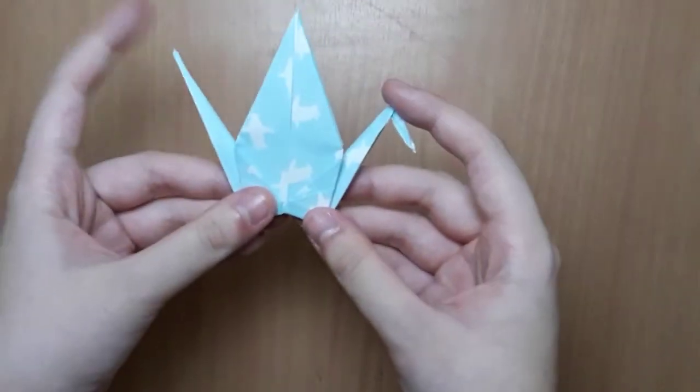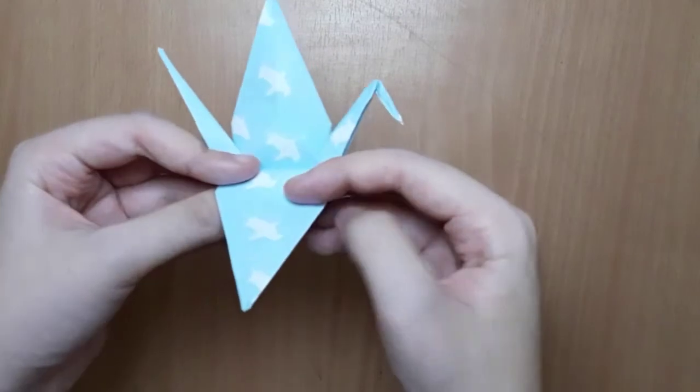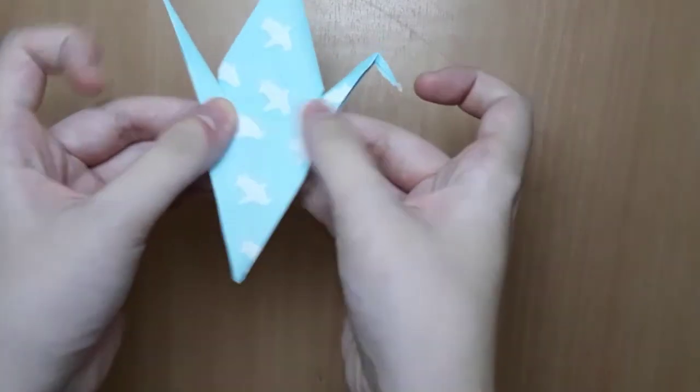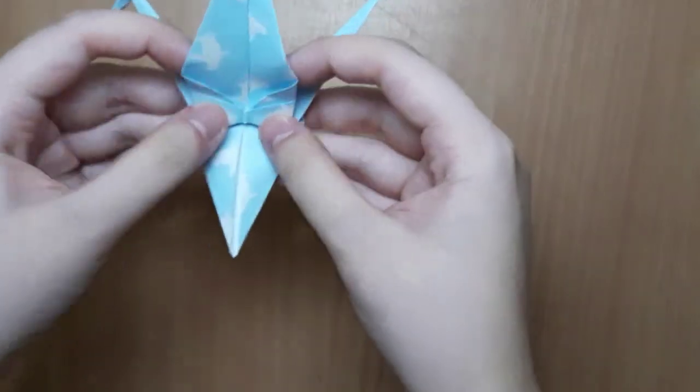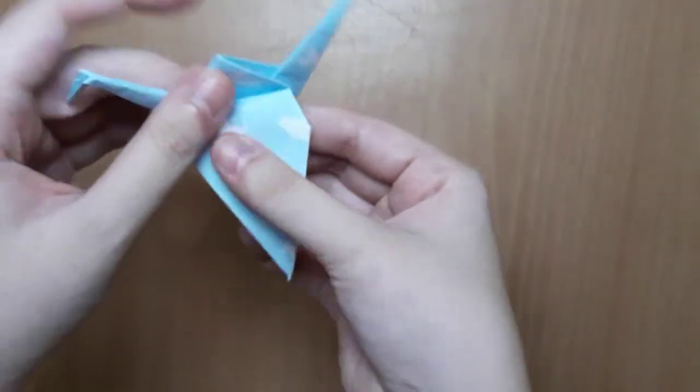See? It's kind of looking like a crane now. Then fold down the wings. See the triangle here. Same on the other side, because you know origami is all about that symmetry.